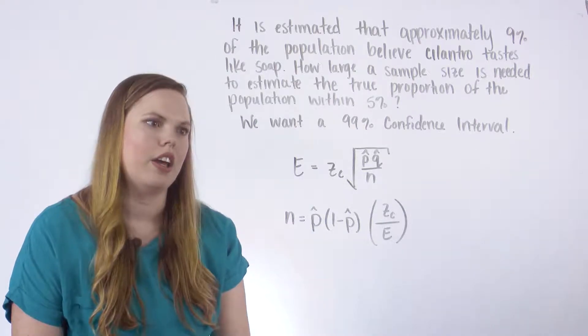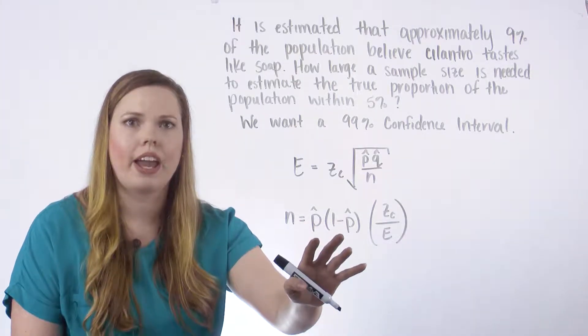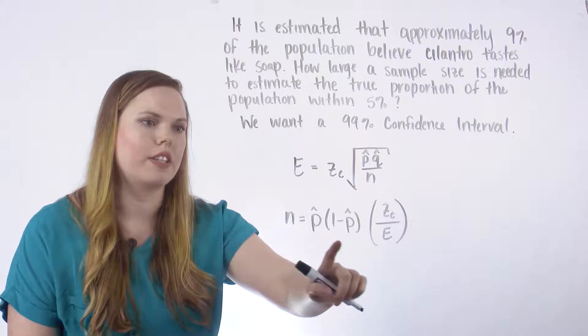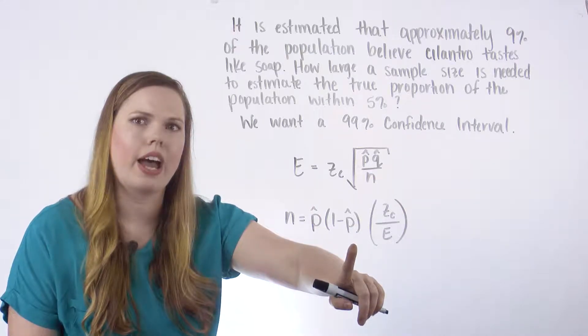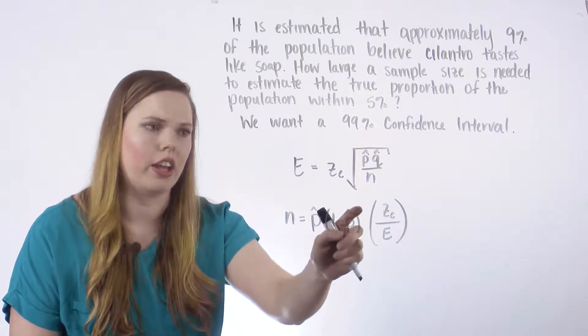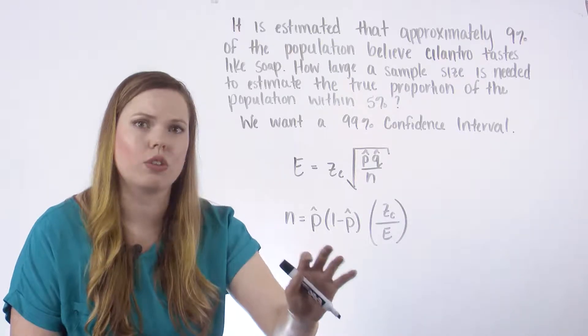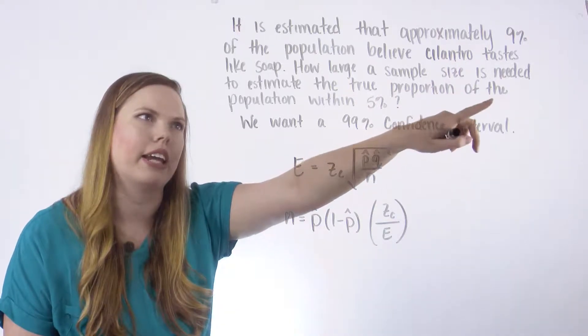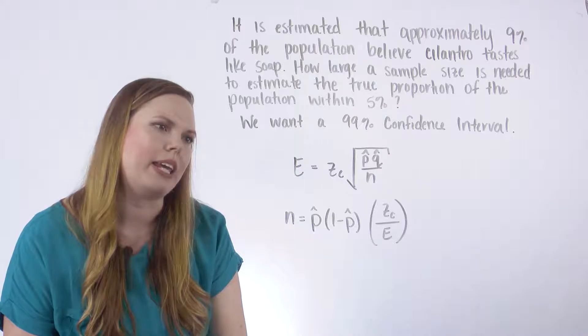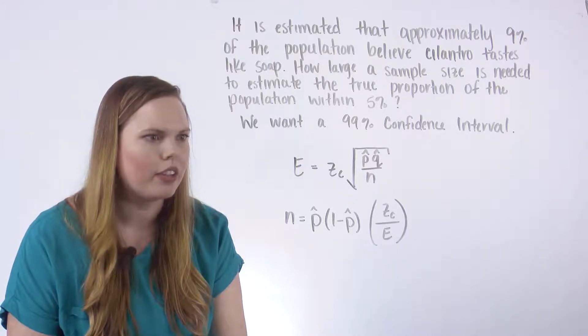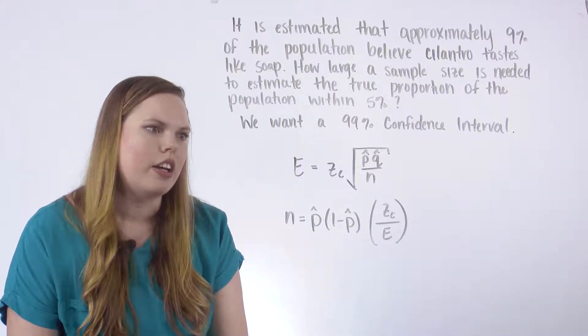Sometimes you may not have a p hat, and you can use instead of this p hat times 1 minus p hat, you can use 1 fourth for this whole place if you do not have an estimated sample p hat, a point estimate. You can use 1 fourth there.